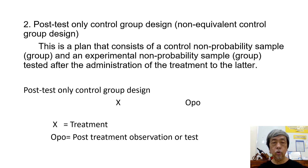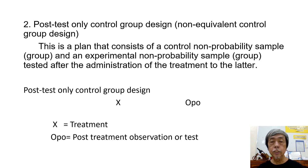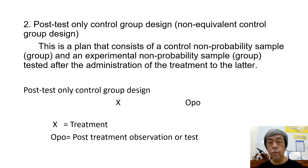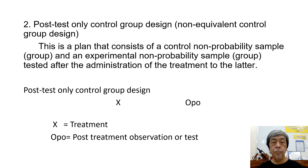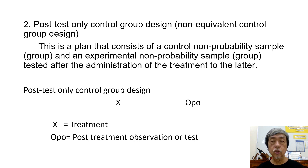The second is the post-test only control group design, also called non-equivalent control group design. This is a plan that consists of a controlled non-probability sample or group and an experimental non-probability sample or group, tested after the administration of the treatment to the latter. The plan is: X, OPO — where X is the treatment and OPO is the post-treatment observation or test.